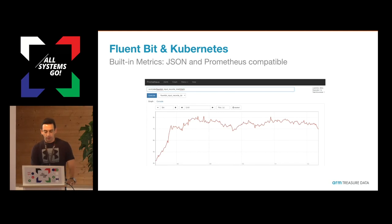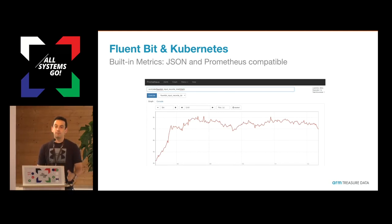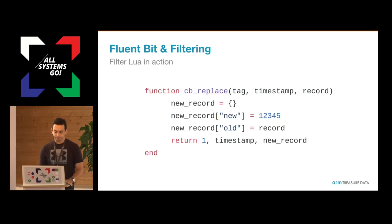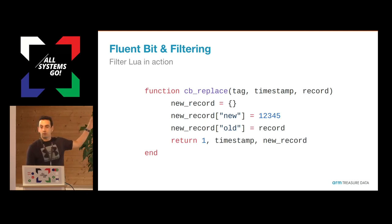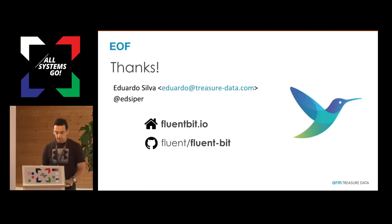We also support gathering metrics from the log processor using Prometheus or just curl over HTTP. And if you want to filter your data without writing your own plugins in C, you can use the Lua filter — just write a simple function in Lua in a configuration file that can filter the data for you. That was the talk, thank you.